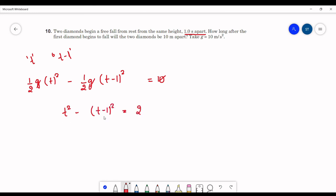This is in a square minus b square form. So this can be written as a plus b into a minus b equals to two. So from this we can get t equals to three by two, which is 1.5 seconds.